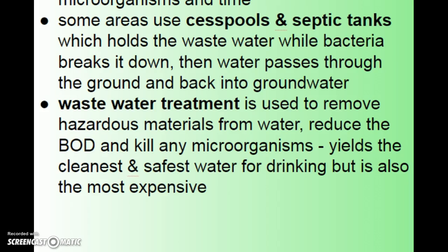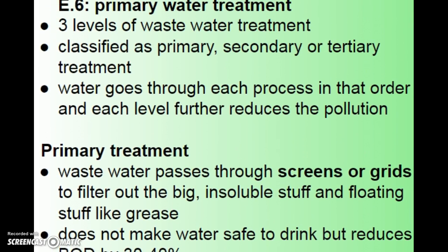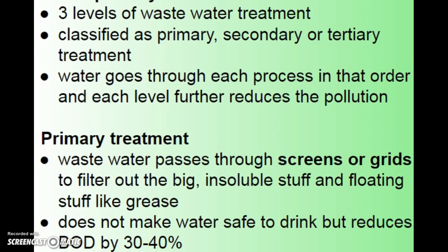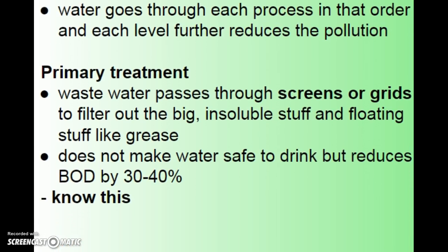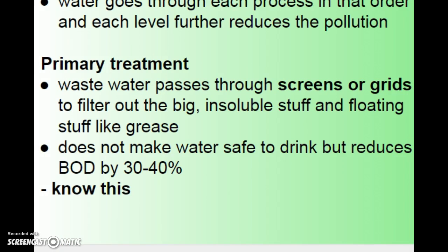There are three levels of wastewater treatment — primary, secondary, and tertiary — each with a specific process. Water passes through them in order, with each level further reducing pollution and increasing expense. Primary treatment is simply screening: a grate or fine screen filters out large solids, and floating material like grease is removed. This reduces the biological oxygen demand by 30 to 40 percent, but it doesn't do anything to make your water safer to drink.